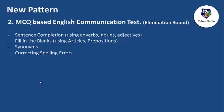Next is the MCQ-based English communication test, which is also an elimination round. The probable topics include sentence completion using adverbs, nouns, and adjectives; filling blanks using articles and prepositions; synonyms — words with similar meanings; and spelling-based questions where you need to select the correct spelling. These are the kinds of questions probable in the MCQ-based English communication test.